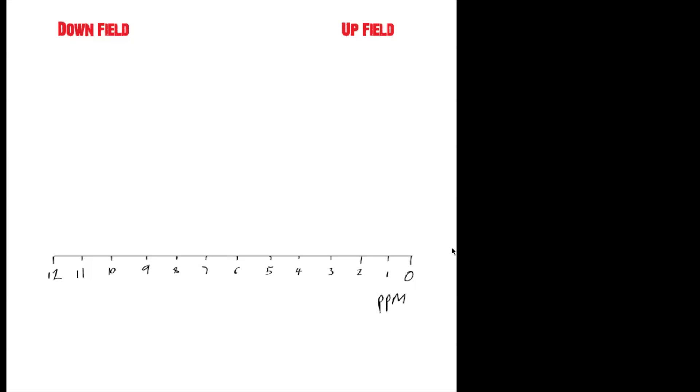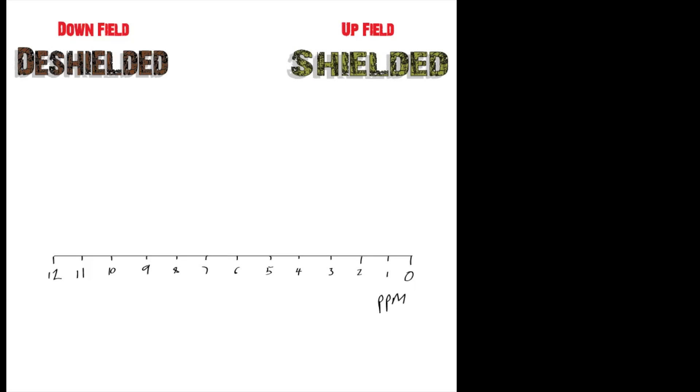So let's have a look at what a chemical shift means in terms of shielding. So I'll leave the terms upfield and downfield on this screen. So basically, in this region, in the lower regions between 0 and 5, these are considered to be shielded. So the electrons surrounding the nucleus here are quite dense, the electron density is quite dense around the nucleus.